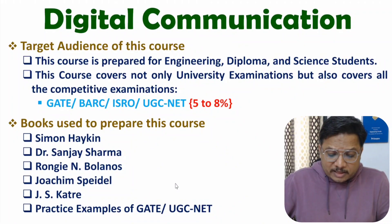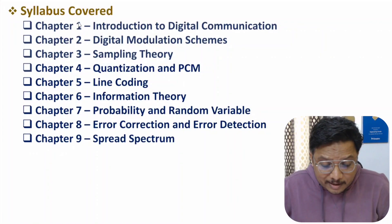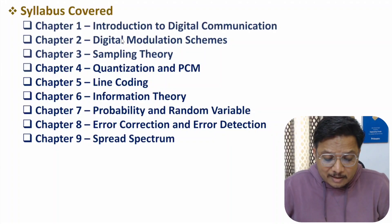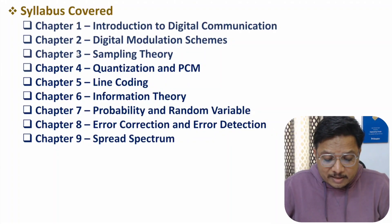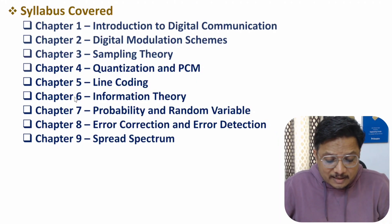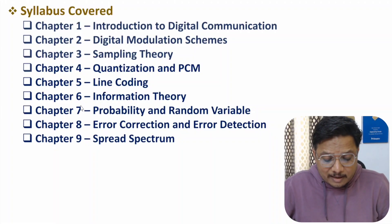In this course of digital communication I have prepared a total of nine chapters. Chapter one covers introduction to digital communication, chapter two is about digital modulation schemes, chapter three is based on sampling theory, chapter four covers quantization and pulse code modulation, and chapter five discusses line coding.